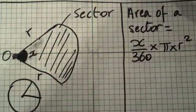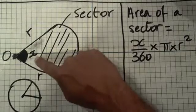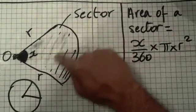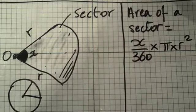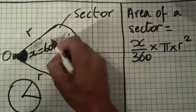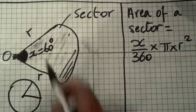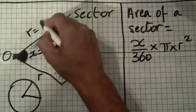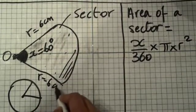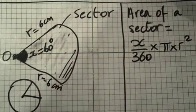Now, most of the time in your exam paper, they will give you how much this angle is. So in this case, I'm going to pretend that the angle is 60 degrees. And I'm going to say that r is equal to 6 centimeters on both sides, because they're both radiuses.